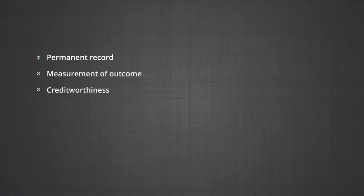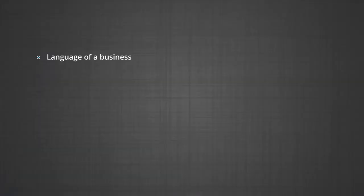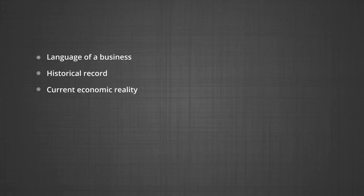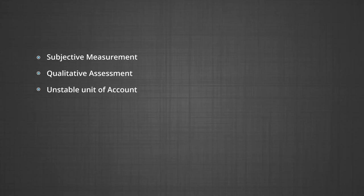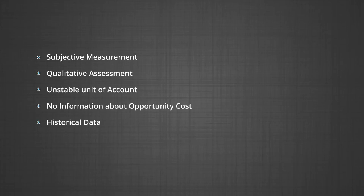Other objectives of accounting are permanent record, measurement of outcome, creditworthiness, efficient use of resources, and projections. The role of accounting — accounting is not an end in itself, it is a means to an end. It plays the role of a language of business, provides a historical record, provides information about current economic reality, serves as an information system, and also acts as a service to its users. Limitations of accounting include: subjective measurement, qualitative assessment, unstable unit of account, no information about opportunity cost, and only historical data.